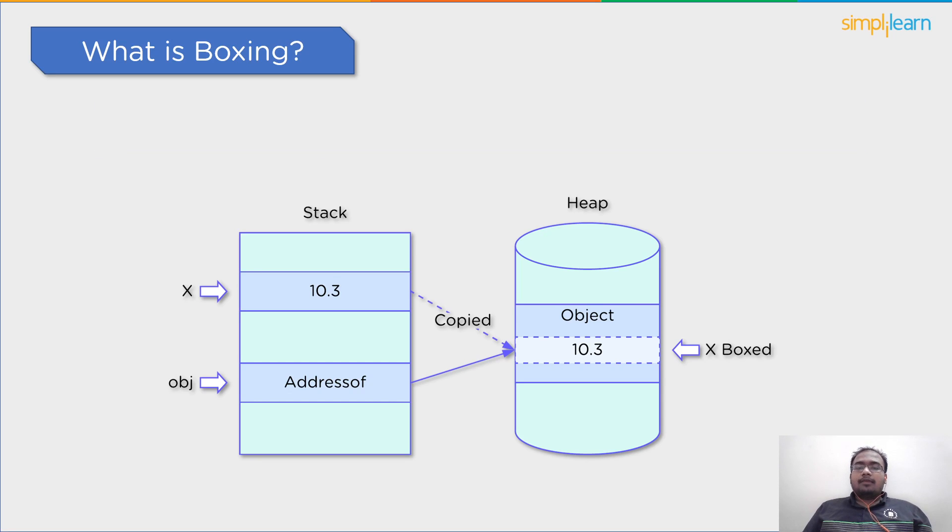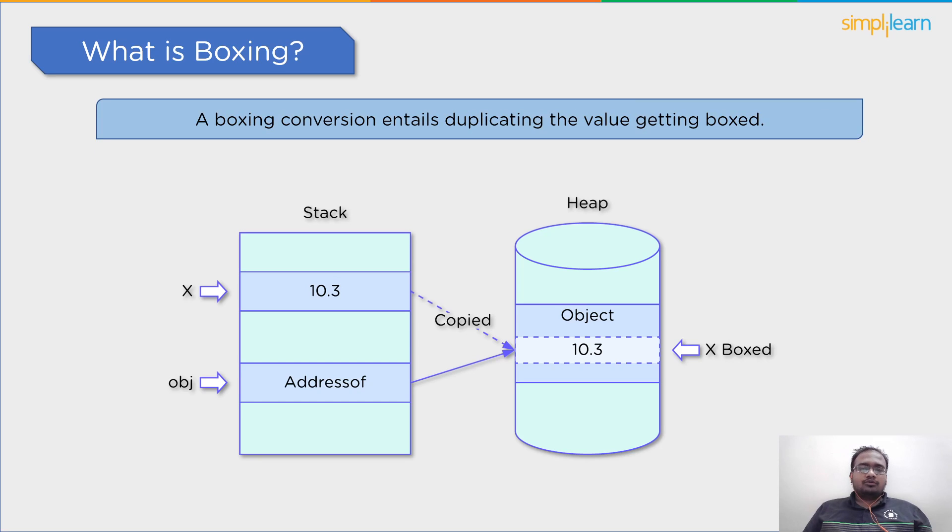At last, making a duplicate of a value being boxed is conveyed by a boxing conversion. This is unique from a reference type to type object conversion in which the value continues to point to the same instance and is just treated as the lost derivative type object.